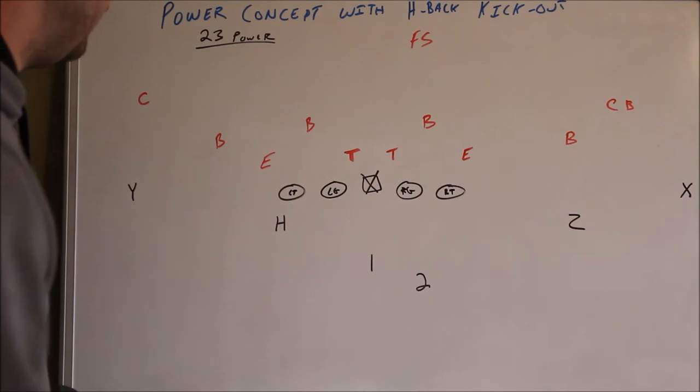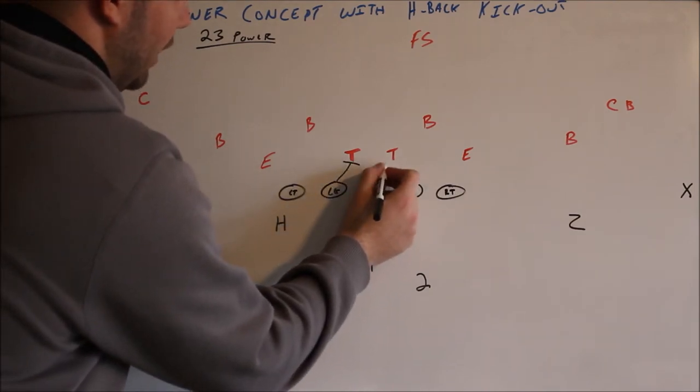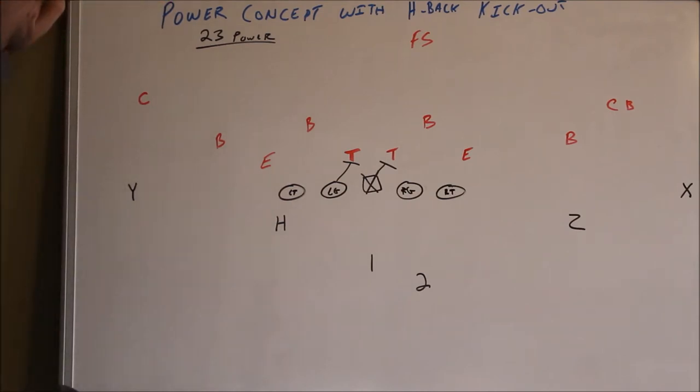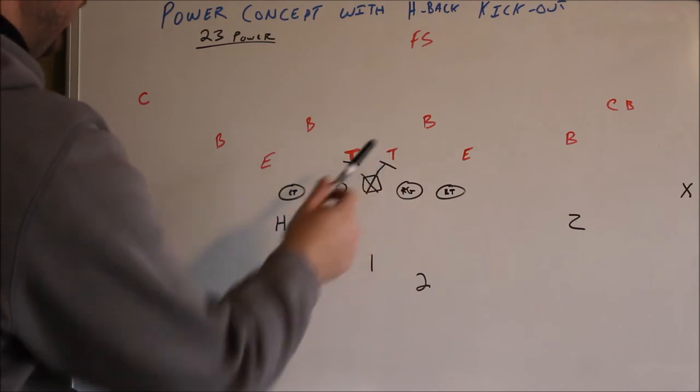But let's start with the play side blocking. This play side guard is going to block down on this tackle. The center is going to block the back side of the defender. Any time the center has double A gap, she's always blocking the back side A gap defender.